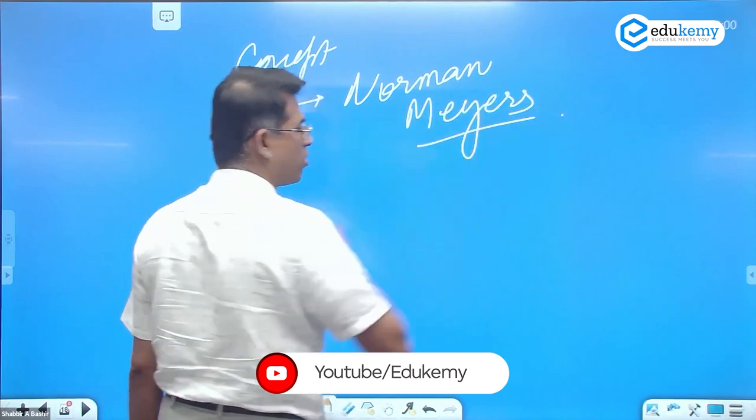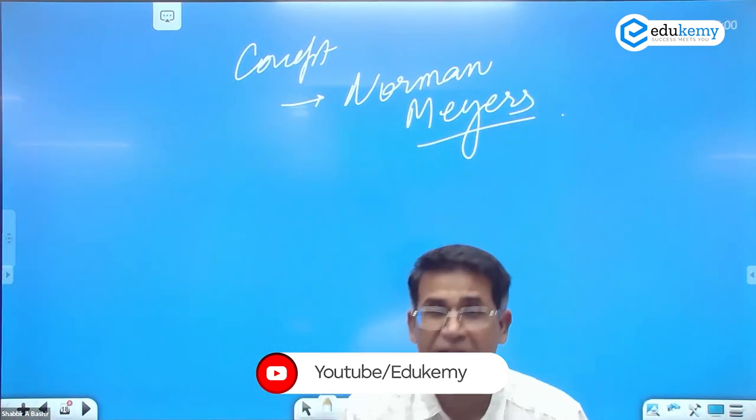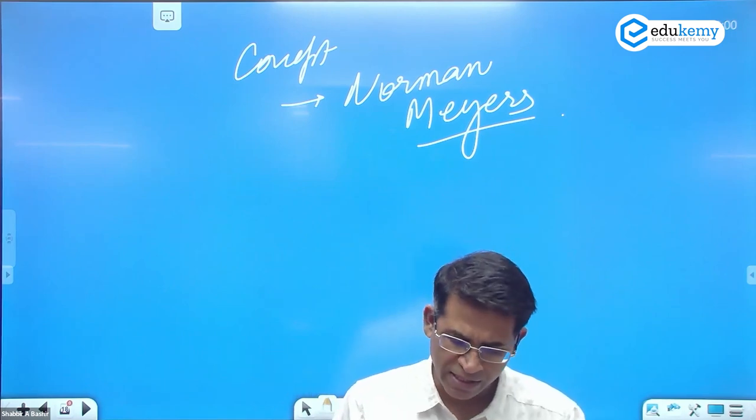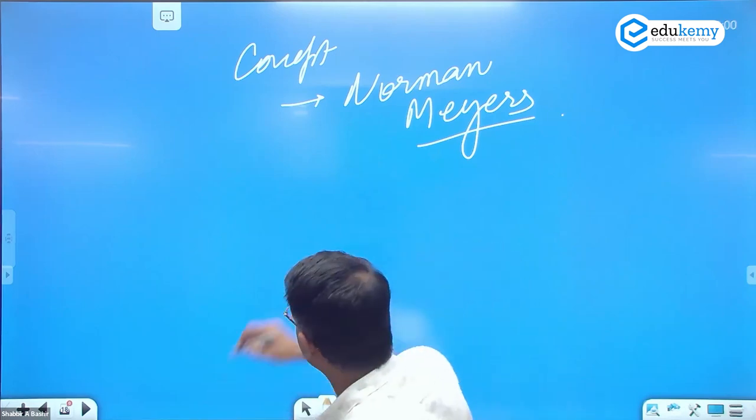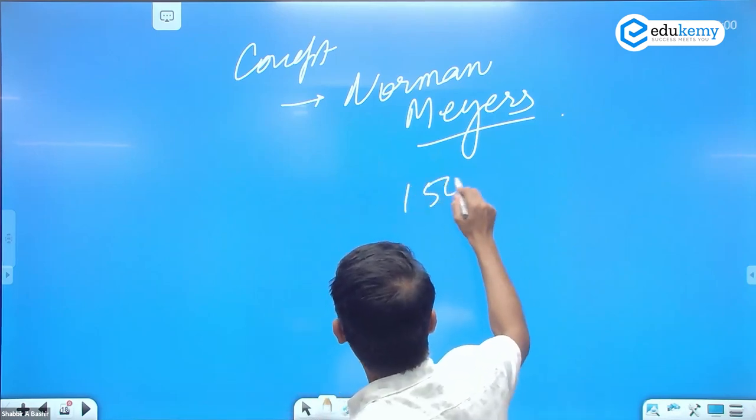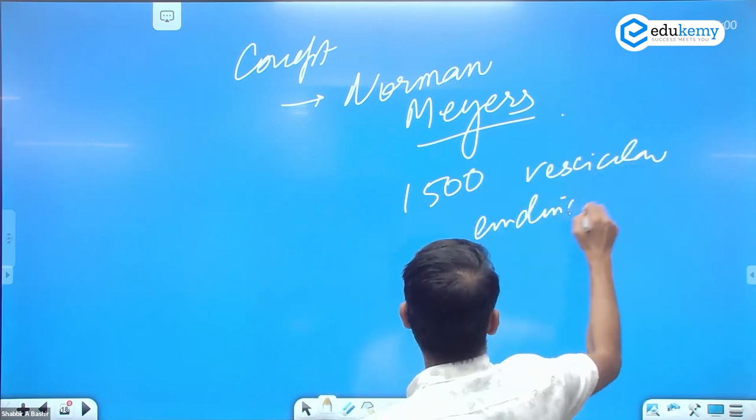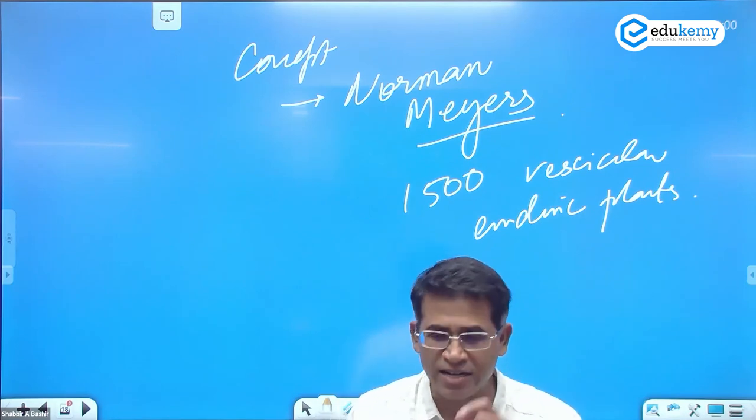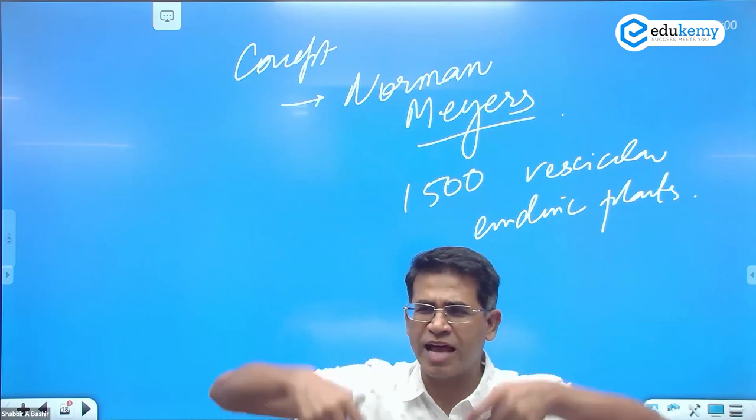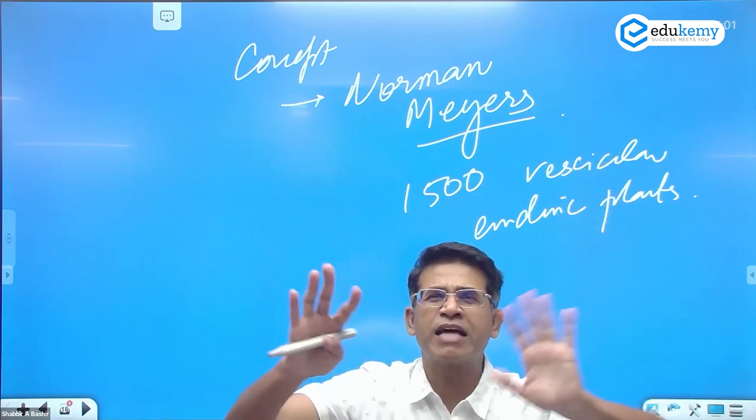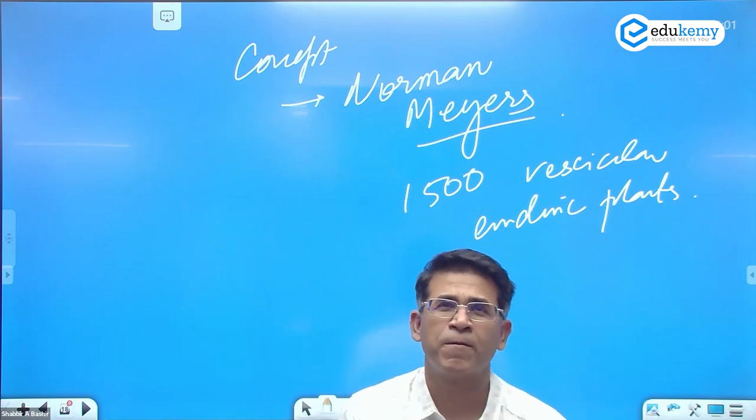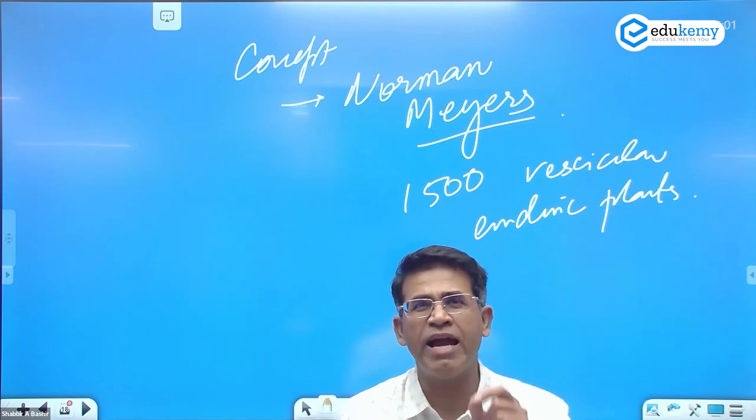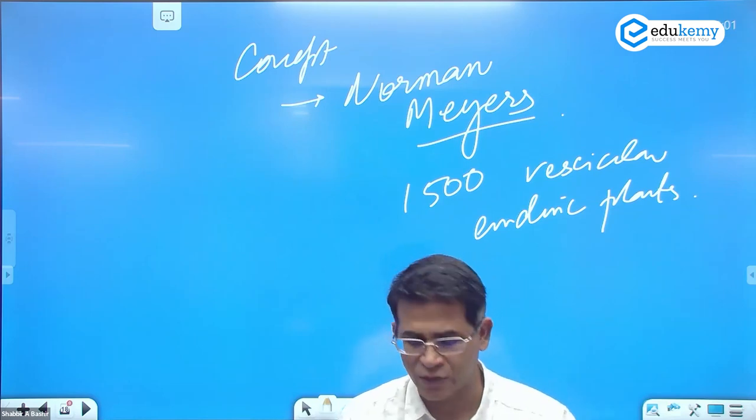Now this concept was given by Norman Myers in 1988-89, and it defined the hotspots as locations where there are at least 1500 vascular endemic plants. Vascular - vessels, xylem vessel, phloem vessels - the typical type of plants, plants and trees. At least 1500 vascular endemic plants.